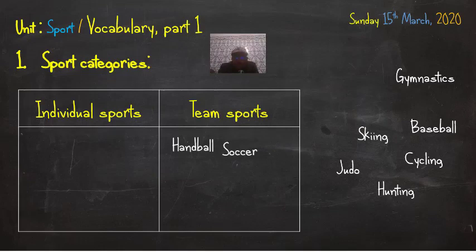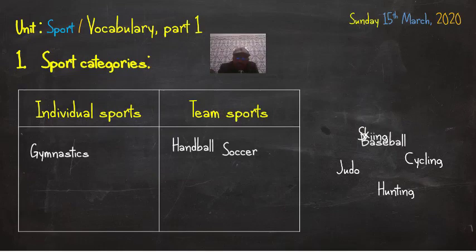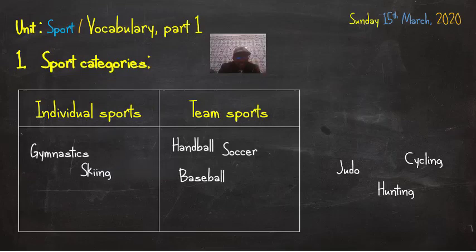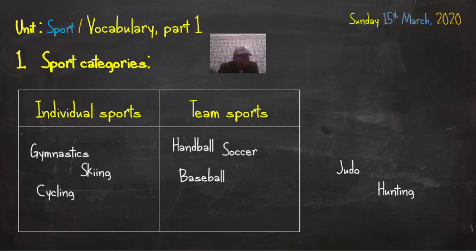Let's move to gymnastics. It's an individual sport. Let's move to baseball. That's a team sport too. Let's move to skiing - skiing is an individual sport, there is one person going skiing. And then cycling - it's a sport in which we use the bike or bicycle. It's an individual sport. What about judo? Very good. That's an individual sport too.